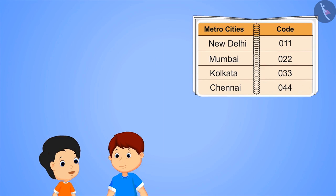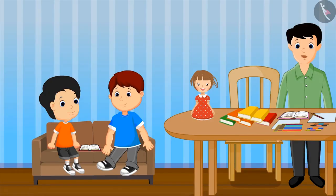What's that? The code of the four metro cities of our country is 011, 022, 033, and 044. Hey, this pattern is so easy to remember. Hey kid, you are not going to play today?